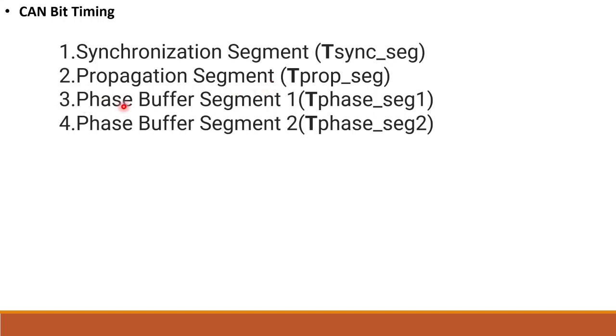The propagation segment is used in CAN Bit Timing. Next are phase buffer segment 1 and phase buffer segment 2. These are mainly used for re-synchronization.